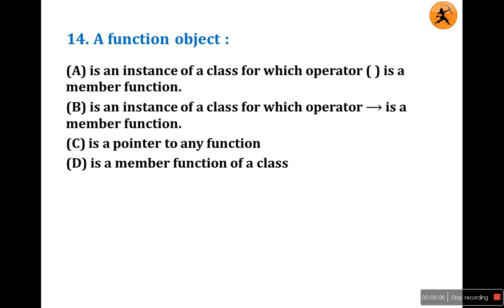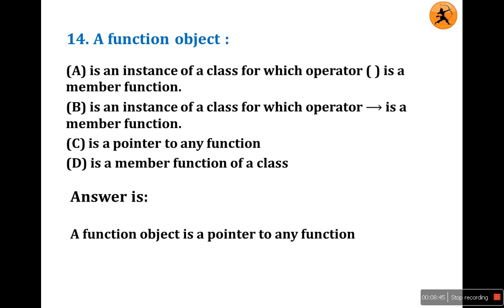Question number 14: What is a function object? Answer A: it is an instance of a class for which operator() is a member function. Answer B: instance of a class for which operator-> is a member function. Answer C: a pointer to any function. Answer D: a member function of a class. A function object indirectly represents a pointer to any function, so answer is C.